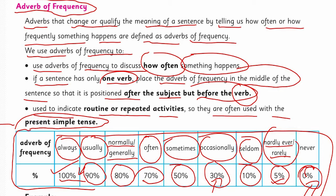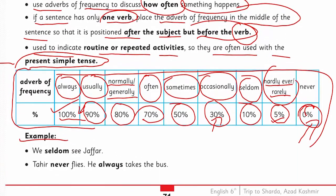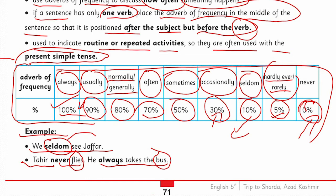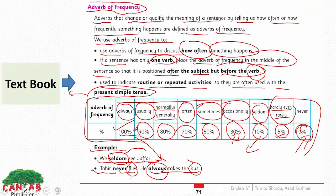Seldom کے 10% chances ہیں۔ Example: 'We seldom see Jafar' — بہت کم جافر سے ملتے ہیں۔ 'He never did this' — never کے 0% chances ہیں۔ Example: 'Tahir never flies; he always takes the bus' — یعنی وہ کبھی aeroplane سے نہیں جاتا، ہمیشہ bus سے سفر کرتا ہے — 100% surety ہے کہ Tahir ہمیشہ bus سے travel کرتا ہے۔